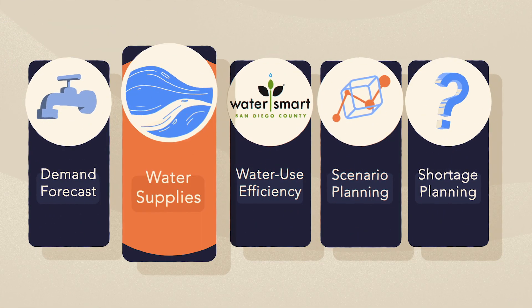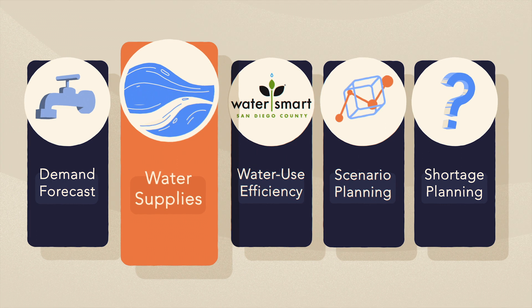So, where does all this needed water come from? The second major element that the plan evaluates are the sources of water supply available to the Water Authority and its member agencies.